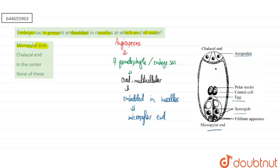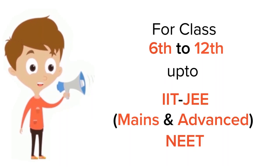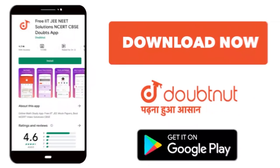So our correct answer will be the first option. I hope this answered your question. Thank you. For class 6 to 12, IIT-JEE and NEET level, trusted by more than 5 crore students, download Doubtnet app today.